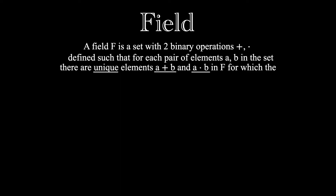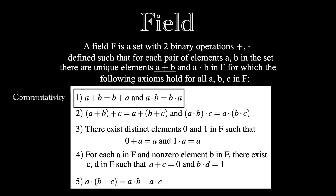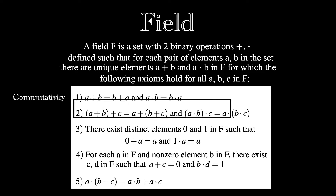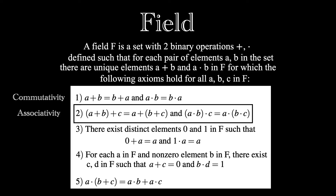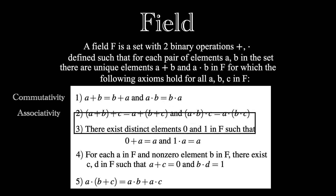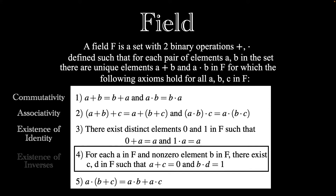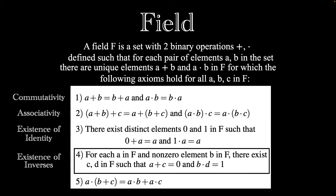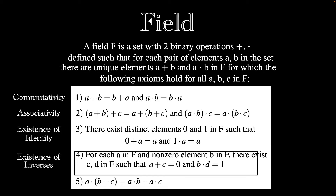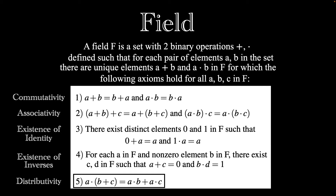Furthermore, the following axioms must hold for all elements in the field. Both addition and multiplication are commutative, so for any two elements, the order in which you add or multiply doesn't matter. Both addition and multiplication are associative, so when adding or multiplying, the way elements are grouped doesn't matter. 0 and 1 must exist, usually referred to as the additive identity and the multiplicative identity. There must also be an additive inverse and a multiplicative inverse, and the final axiom ensures that distributivity holds.